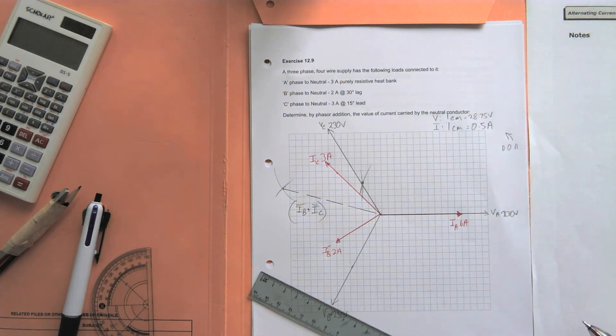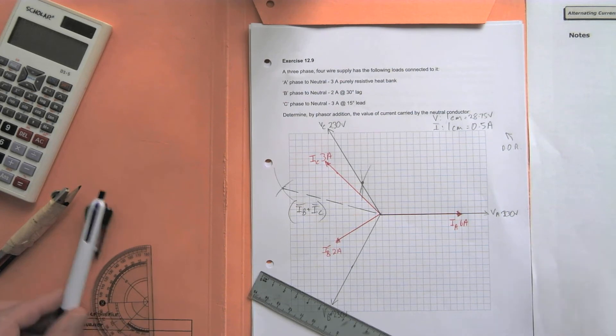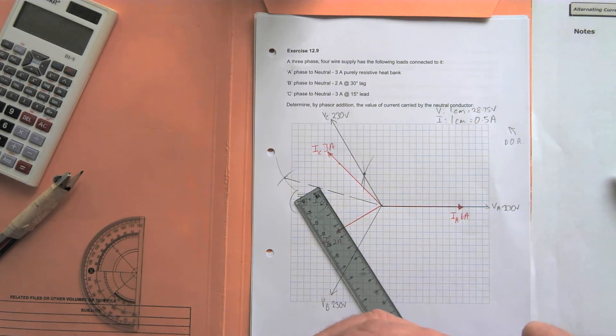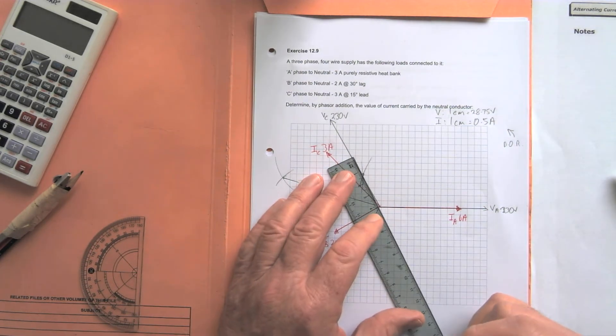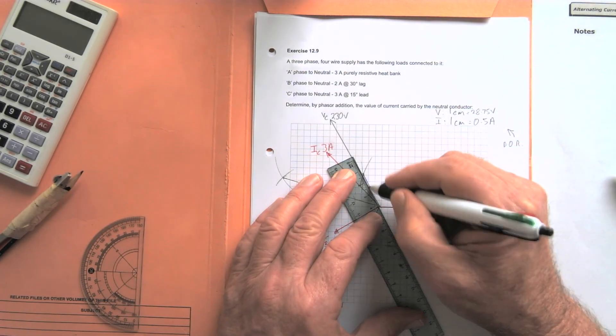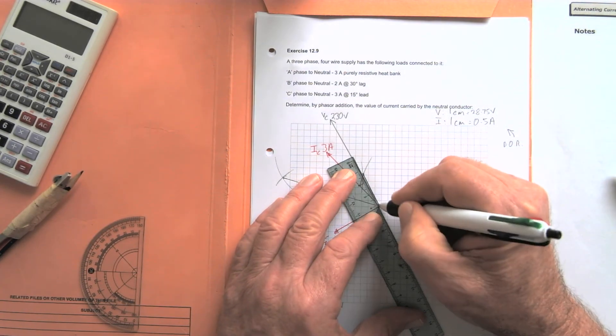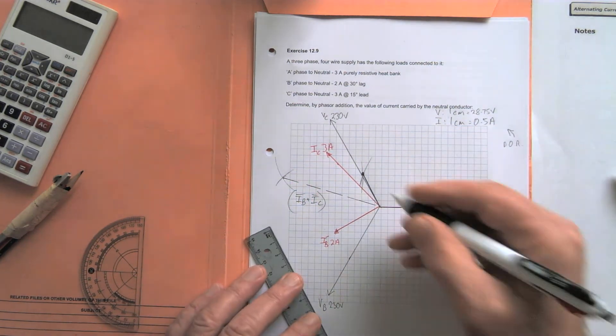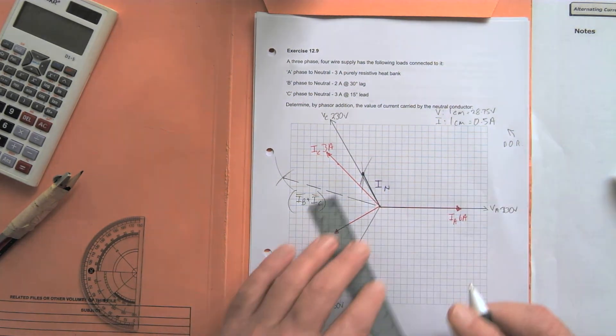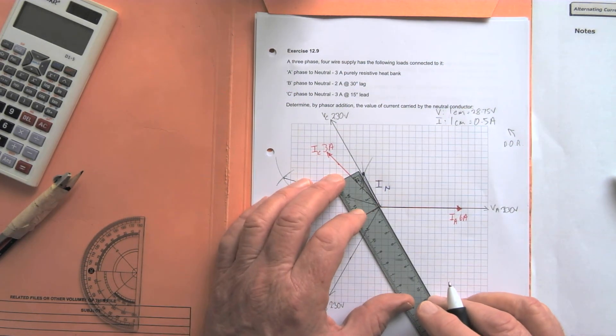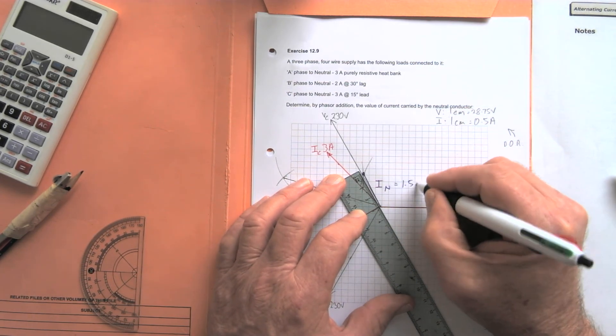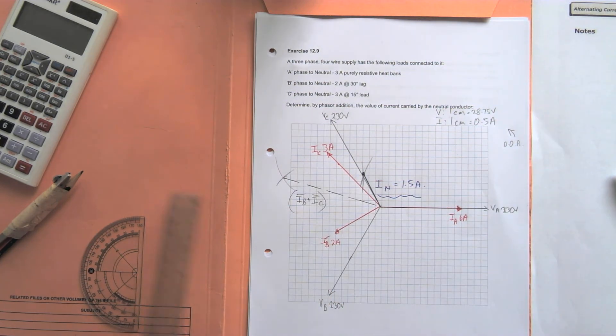Basically, which is the resultant of the phasor addition. Well, I'll do that in blue maybe, back to there. Okay, so there's your value of IN, which is three centimeters long. Three times 0.5 is equal to 1.5 amps in the neutral conductor.